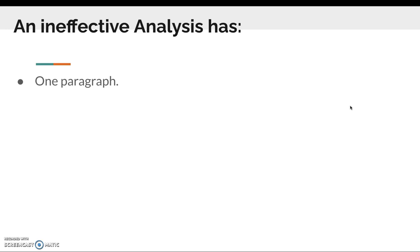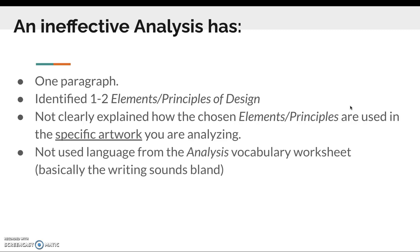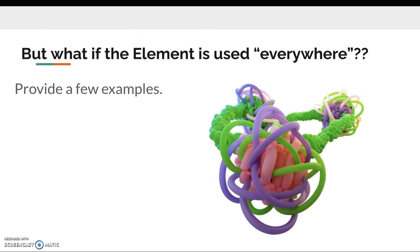Have you determined what the features of the artwork actually suggest? An ineffective analysis has maybe one paragraph because you combined the elements and principles all together. You only identified one to two elements and principles of design. You did not clearly explain how the chosen elements and principles are used in that specific artwork you are analyzing. Be specific about what you see. Are you not using the language from the analysis vocab worksheet? Basically, does your writing sound kind of bland or even possibly elementary? This doesn't mean you have to go crazy and try to use a lot of words from the worksheet, but did you pull maybe two or three? Did you not identify where the elements and principles of design are used? You're just assuming the viewer knows what you're talking about.